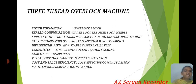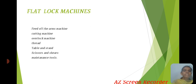Other machines discussed include the Flatlock Machine, Free Arm Machine, Cutting Machine, and Overlock Machine. Additional tools include thread, scissors, and shears. Thank you.